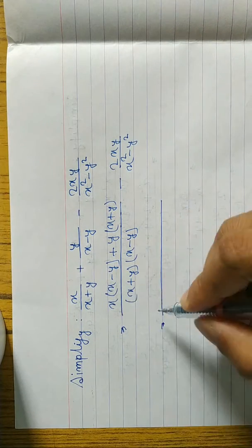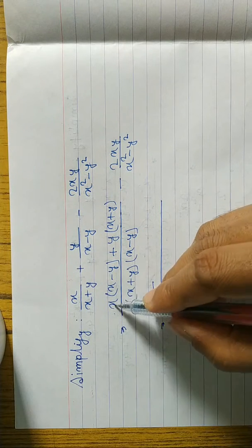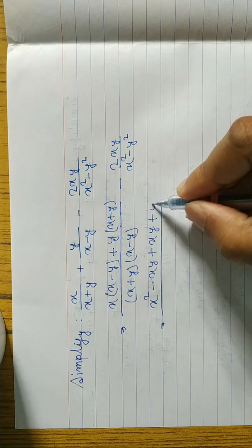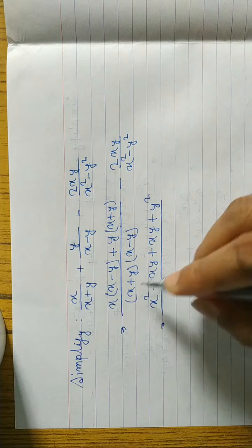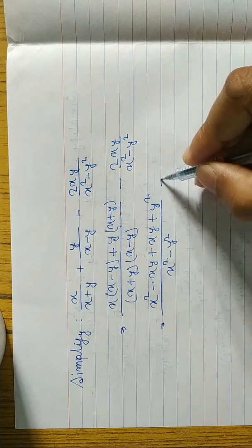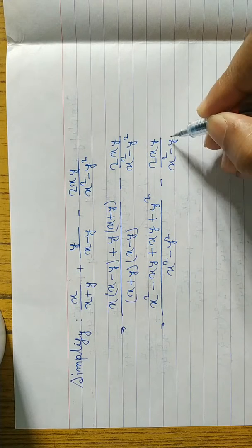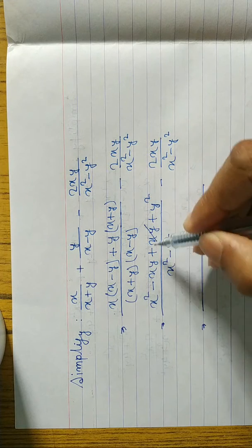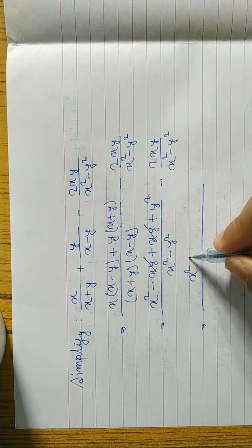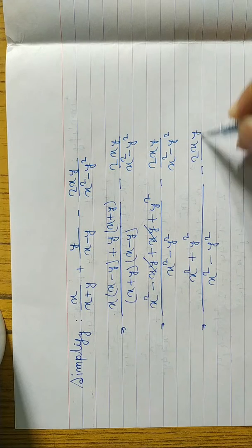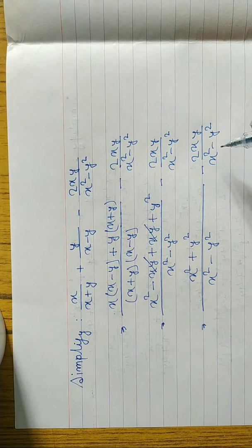Now we open the bracket: x times x gives x square, then plus minus gives minus x times y equals xy; y times x gives xy, and y times y gives y square. The denominator is in the form (a plus b)(a minus b), so we write x square minus y square. After this, we have minus 2xy by x square minus y square. The positive xy and negative xy cancel.